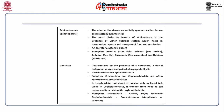Chordata is characterized by the presence of a notochord, a dorsal hollow nerve cord and paired pharyngeal gill slits. It is subclassified into urochordata and cephalochordata, often referred to as protochordates. In urochordata, notochord is present only in the larval tail, while in cephalochordata it extends from head to tail and is persistent throughout life. Examples of urochordata include ascidia, salpa and doliolum. Examples of cephalochordata include branchiostoma (amphioxus) and lancelets.